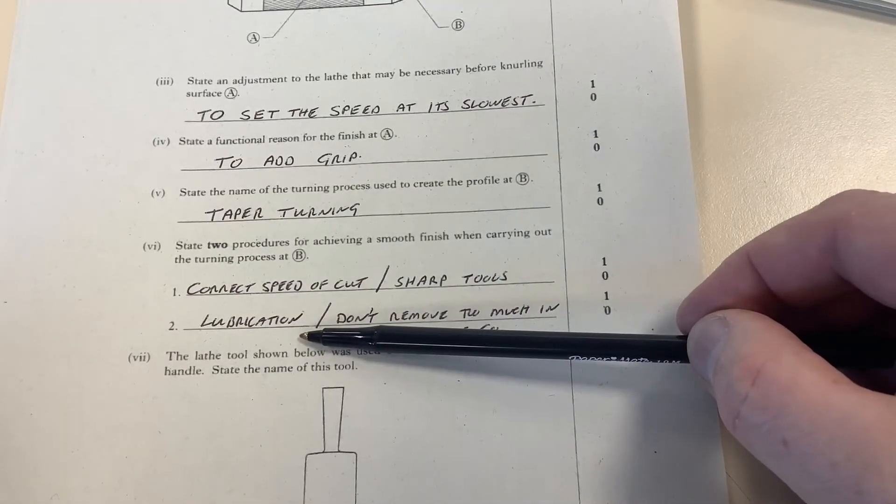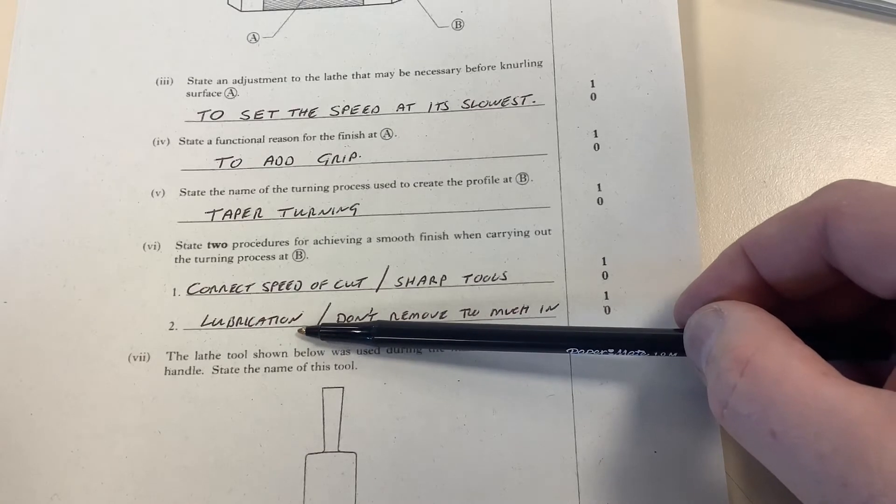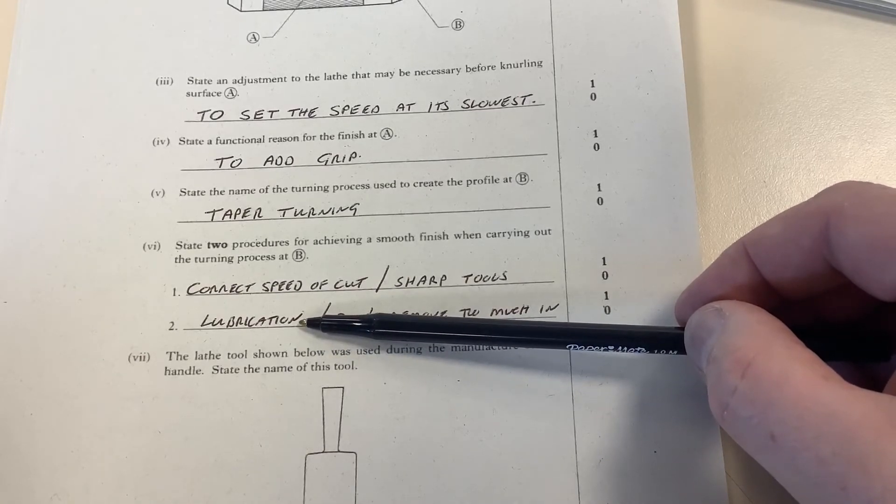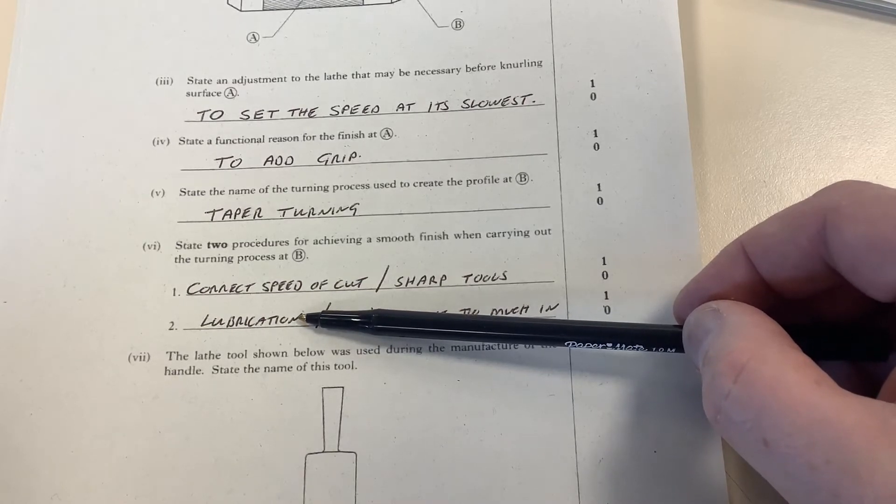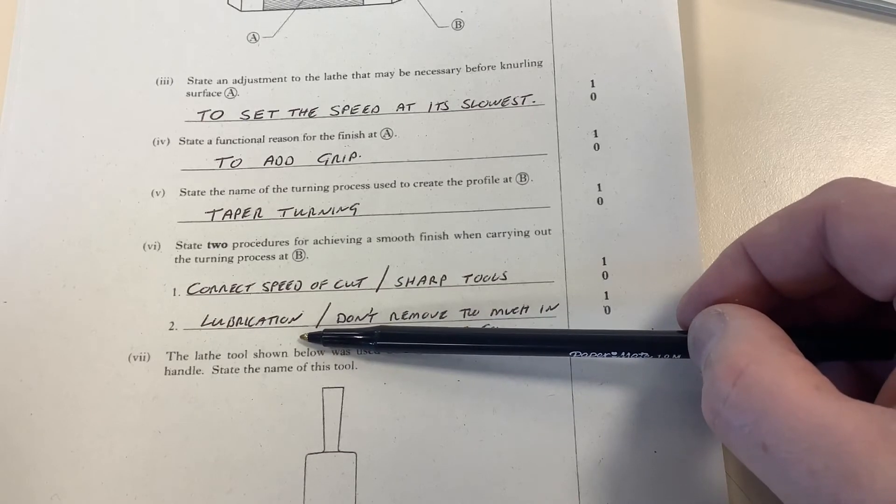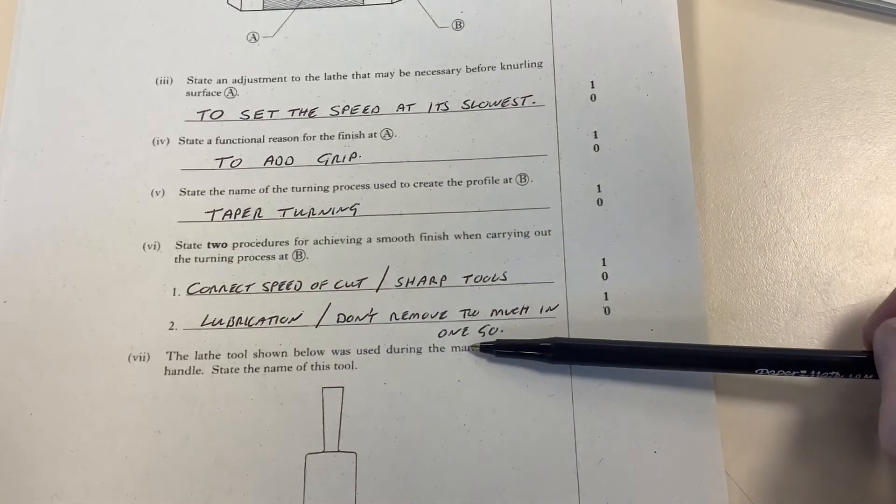Normally our lathes, if you were using them in an engineering workshop, would have lubricant poured over them all the time. We don't have that set up for different reasons which I'll not get into just now. But lubricating the cut and don't remove too much in one go.